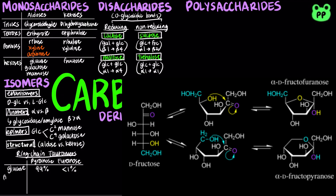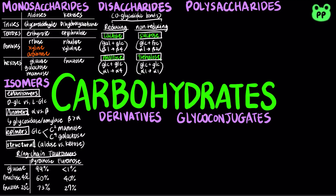At 40 degrees Celsius, around 60% of fructose exists in pyranose form, whereas 40% of fructose exists in furanose form. When the temperature is lowered to 25 degrees Celsius, the average mass percentage of pyranose increased to 73%, and percentage of furanose decreased to 27%.